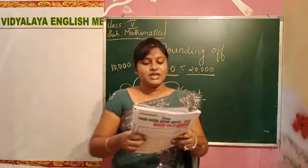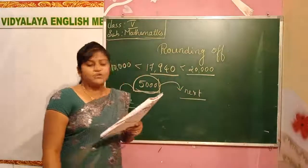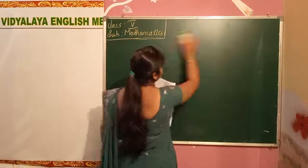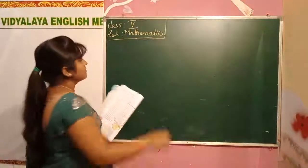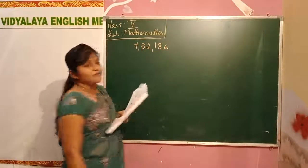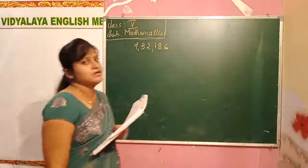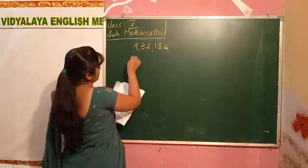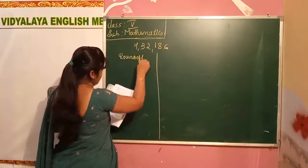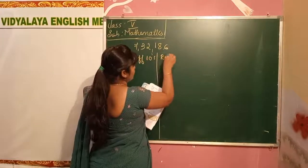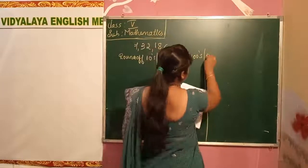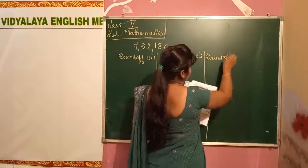We did the rounding of numbers to thousands. Now we will solve some examples. They have given a number in your textbook: 7,32,186. We have to round off to tens, round off to hundreds, and round off to thousands. We will make a column here — round off tens, round off hundreds, round off thousands.